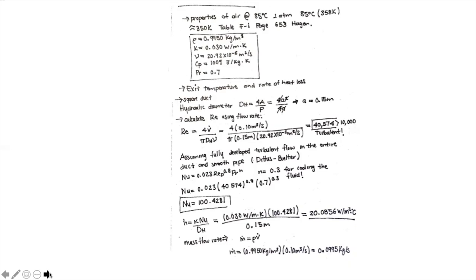Knowing the Reynolds number, you can decide what type of flow you are dealing with — either turbulent or laminar — and then choose one of the correlations available for the Nusselt number. In order to get the Nusselt equation, you need the Reynolds first, because depending on both the geometry and the Reynolds number, you choose a Nusselt correlation to get the heat transfer coefficient. We need the hydraulic diameter because we have a square duct.